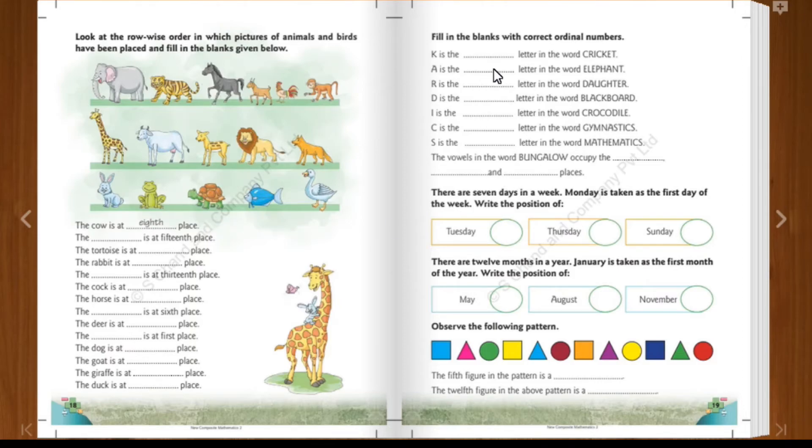Then, next one is fill the blanks. Fill the blanks with the correct position of the alphabet. K is the dash letter in the word cricket. C-R-I-C-K-E-T. K is at 5th place. So, you have to write this is the 5th letter in the word. Like elephant. A is 6th letter. A is at the 6th place. So, you can write 6th letter in the word. Like that, you can fill it up.